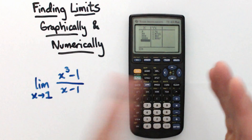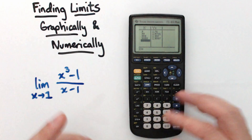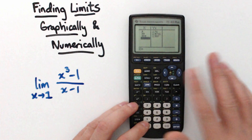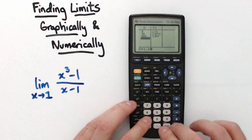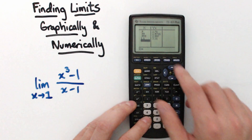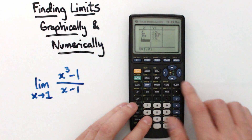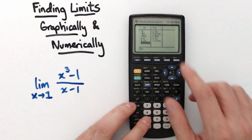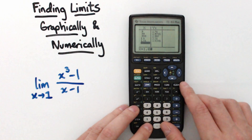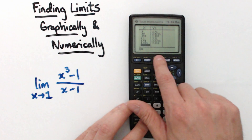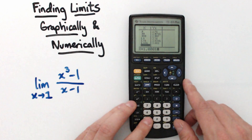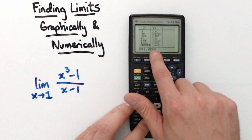Now I'll approach from the right side of 1. Entering 1.1 gives 3.31; 1.01 gives 3.0301; 1.001 gives 3.003; 1.0001 gives 3.0003. From the right side the values are also getting closer and closer to 3, confirming the limit.